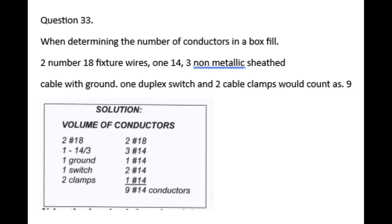Question 33: When determining the number of conductors in a box fill — 2 number 18 fixture wires, 1 number 14, 3 non-metallic sheathed cable with ground, 1 duplex switch, and 2 cable clamps — the total count is 9 conductors.